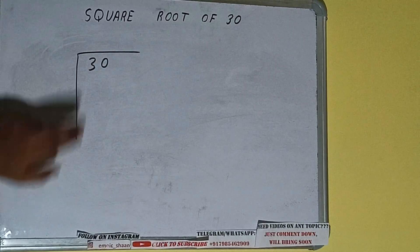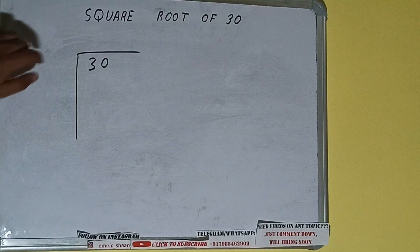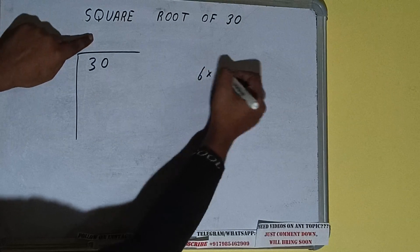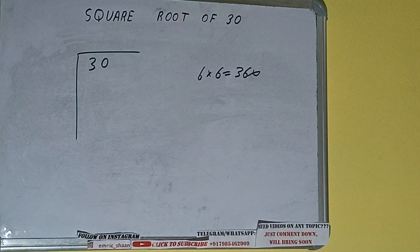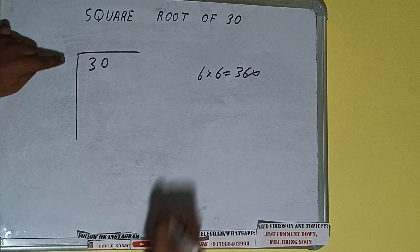is whatever number we write here, we have to write here also. So if we write 6 here and 6 here, it will be 36, which is greater than 30, so we cannot take it. If we write 5